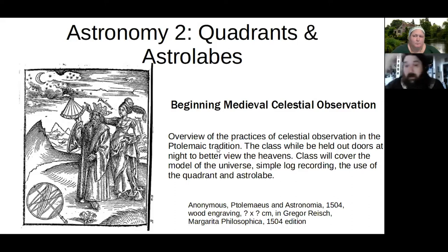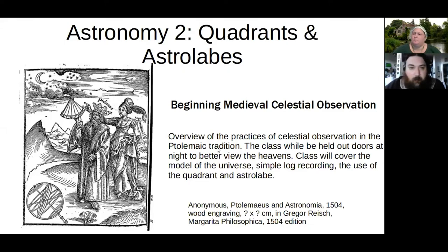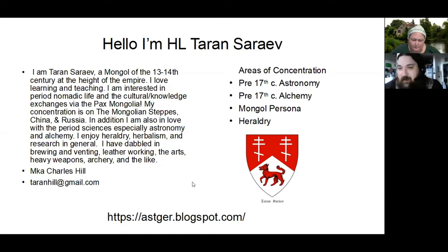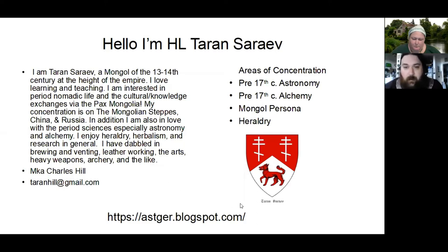This is Astronomy 2: Beginning Medieval Celestial Observation — an overview of how celestial observation was done within the Ptolemaic tradition. Let me introduce myself for the new people. My name is Honorable Lord Teran Sirav. My persona is the Mongol of the 13th and 14th century, especially the Golden Horde. My favorite concentrations are pre-17th century astronomy, alchemy, Mongol persona, and heraldry. I have a website at the bottom that has lots of useful information, bibliographies, and things for you to expand your library on these topics.